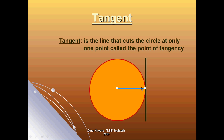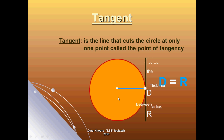This line that cuts the circle at only one point — called the point of tangency — is the tangent line. With respect to the distance between the center of the circle and this line, the distance is equal to the radius. So whenever you have a line tangent to a circle, the distance between this line and the center of the circle is equal to the radius.